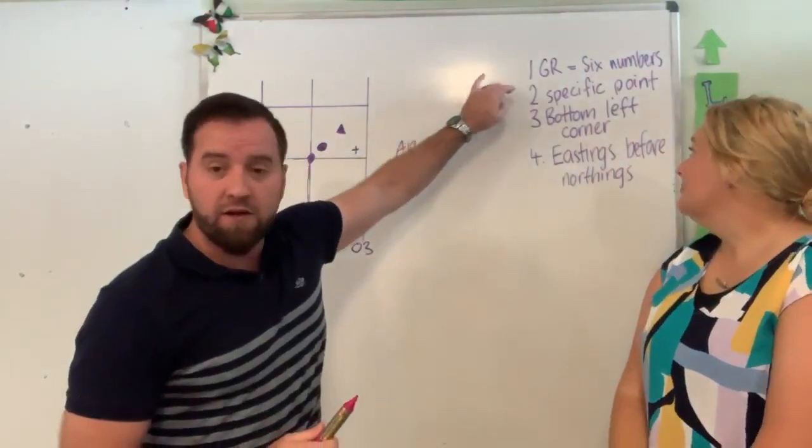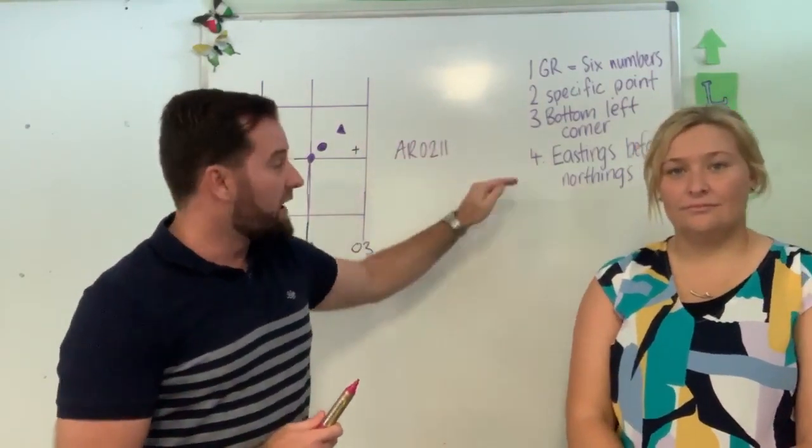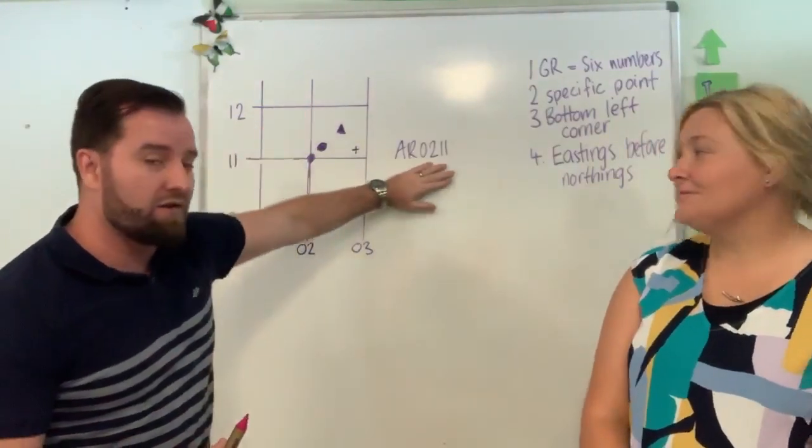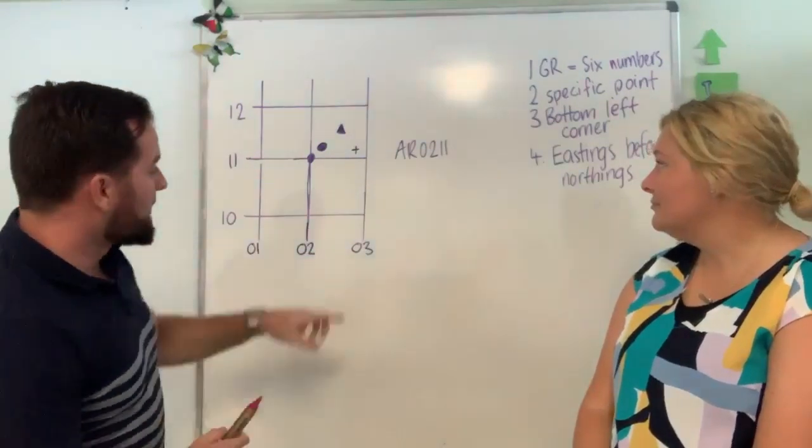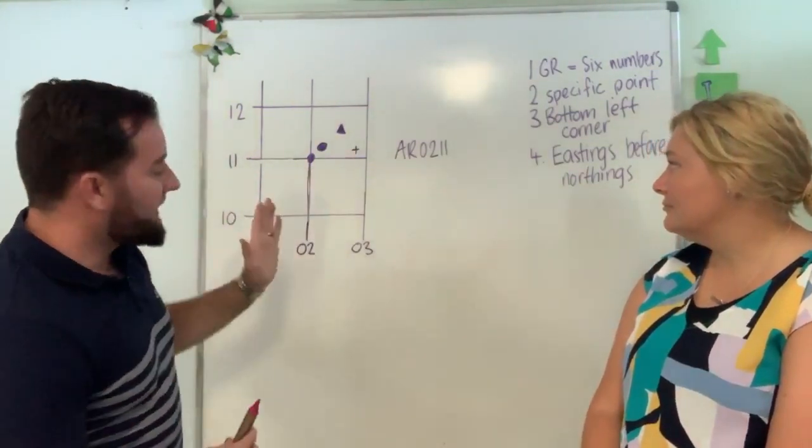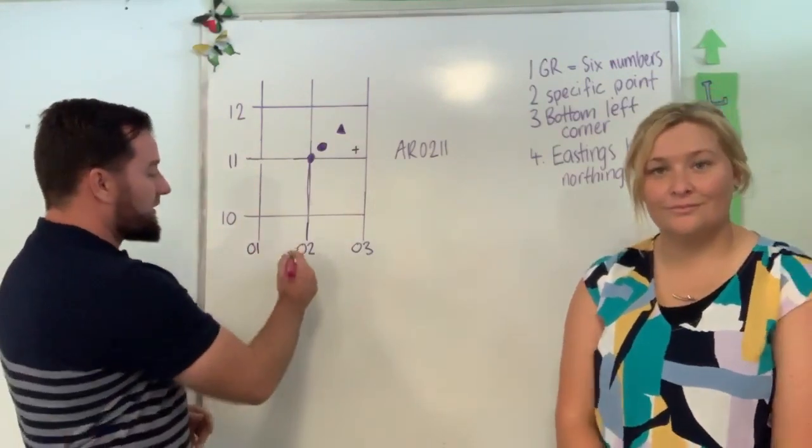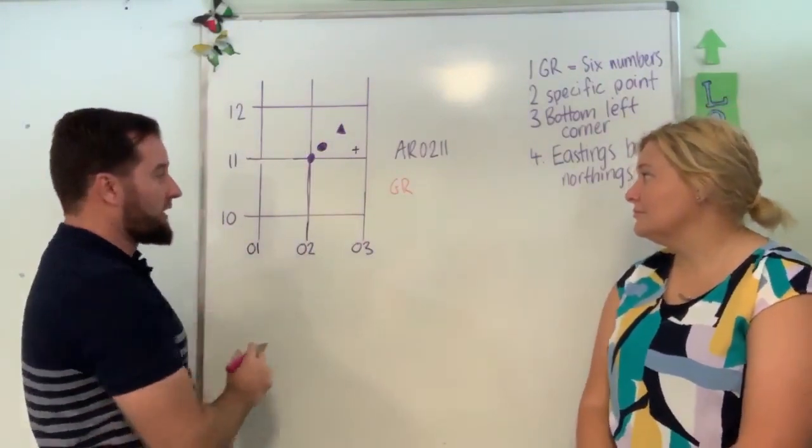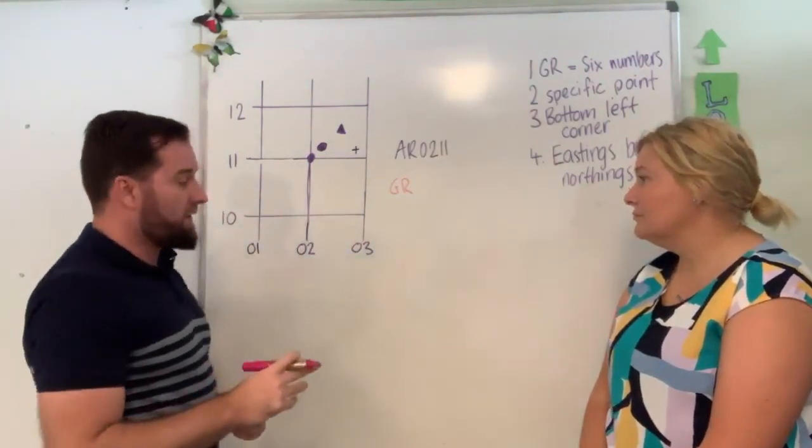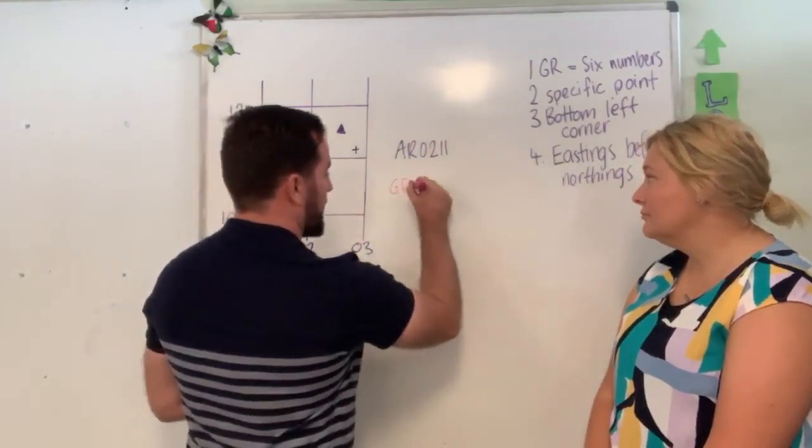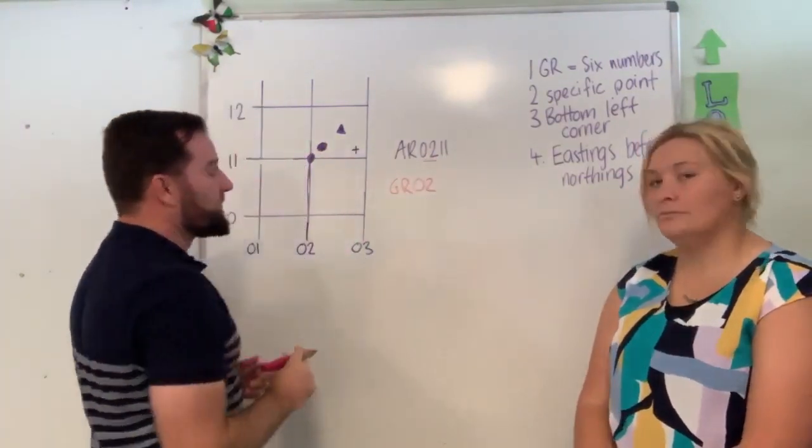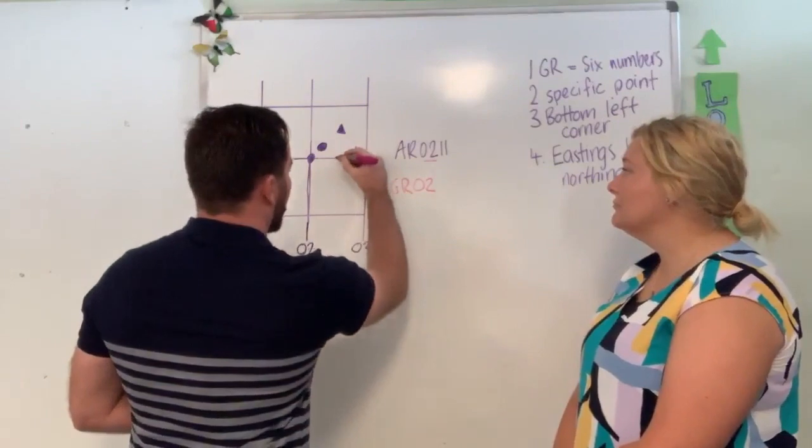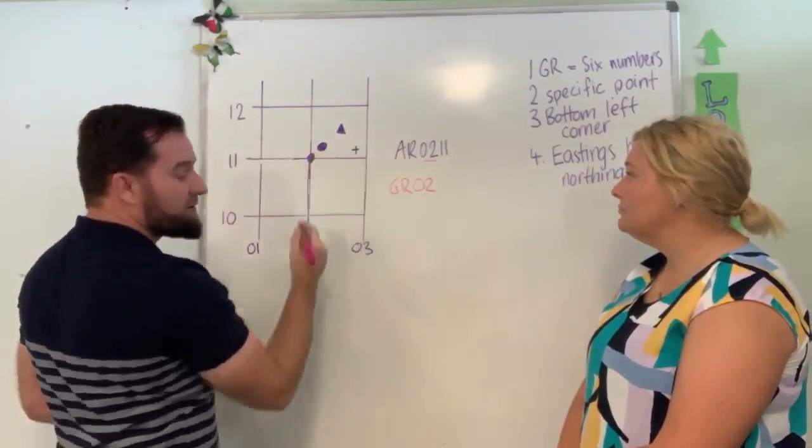Six numbers, specific point, the other two stay the same. We're still going to use bottom left hand corner, and we're still going to do eastings before northings, always. So let's use our same square that we have here. We know the area reference is 0211. So let's do the plus. To get our grid reference, what we're going to do is we start using the exact same numbers. We're still using bottom left hand corner, we're still using eastings before northings, which means our first two numbers are going to be 02 once again. Same here as there. Before we then move on to our northings, we're going to have to make it a little bit more specific.